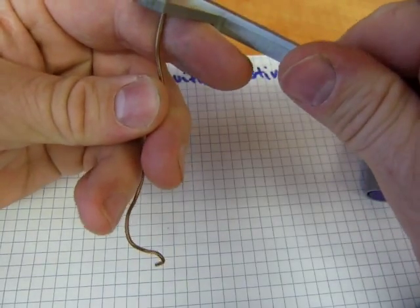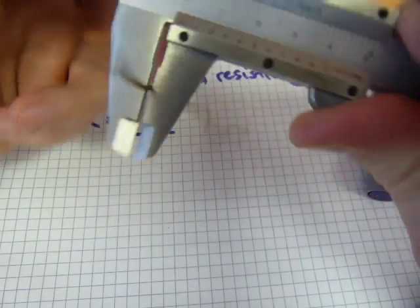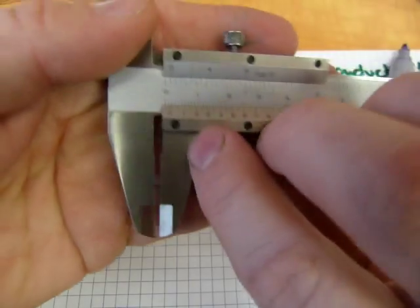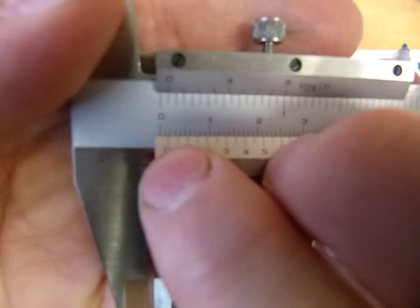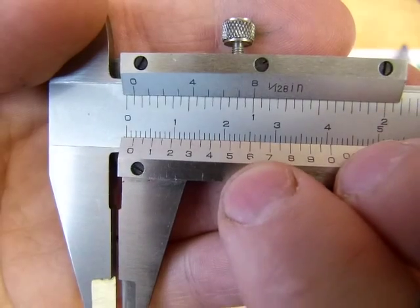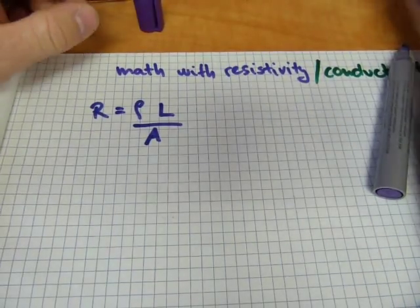I'll just pick a spot where the wire is straight, neither stretched out nor compressed. And if I take a reading on this one, we'll go with 1.6 millimeters for diameter.